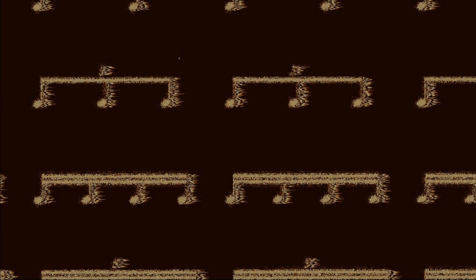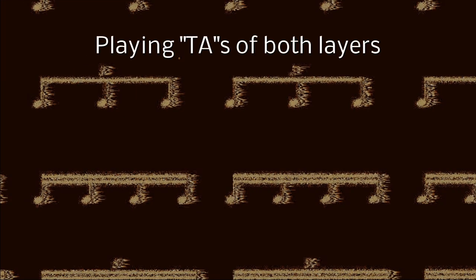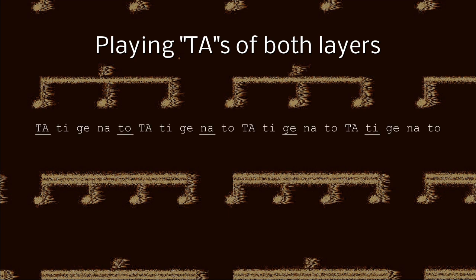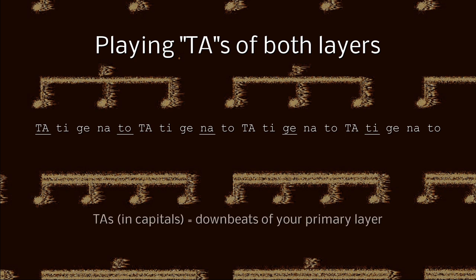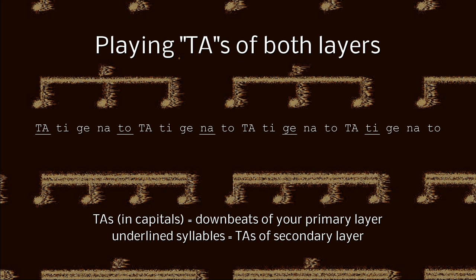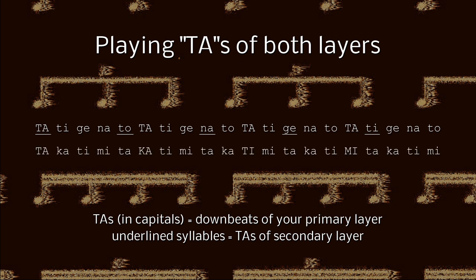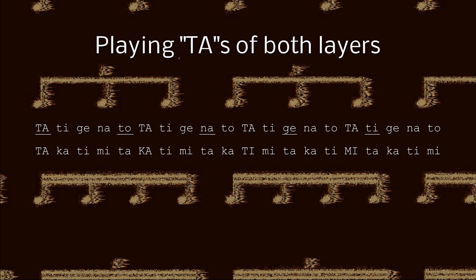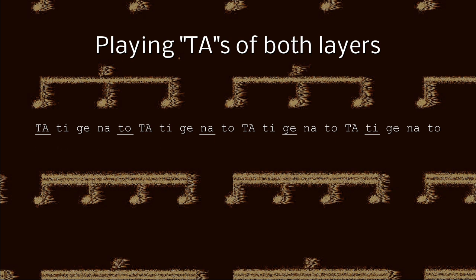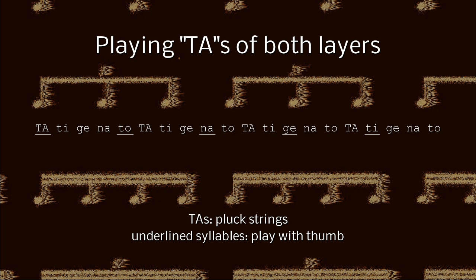The polyrhythmic effect is even stronger when you try to play both layers at the same time. Pianists may try this with one hand playing the taas and the other hand playing the underlined syllables — that means the taas of your secondary layer. As a bass player, you can, for example, play the taas by plucking the strings and the underlined syllables by hitting them with your thumb.